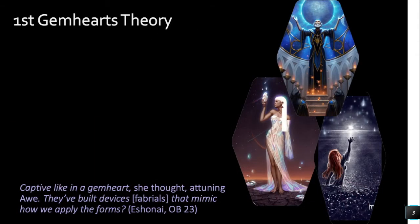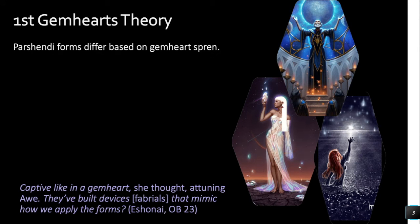My first Gemheart theory starts with a quote from Ash, in her prologue in Oathbringer, page 23: 'a captive like in a Gemheart' — she's talking about a spren, looking at a fabrial that King Gavilar is showing her, that mimics how Parshendi apply forms. This tells us that Parshendi forms change based on the spren in their Gemheart. We know that's how they change forms — by taking a specific type of spren into their Gemheart and bonding during a storm.